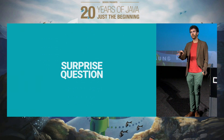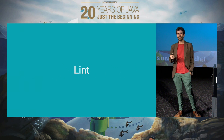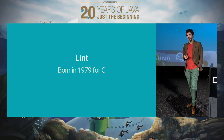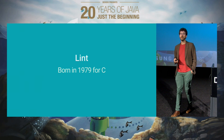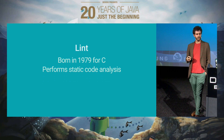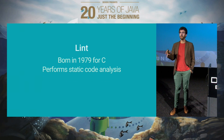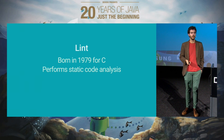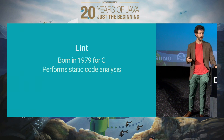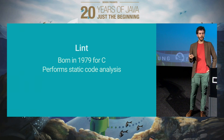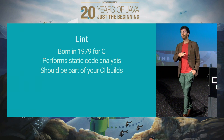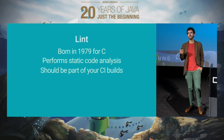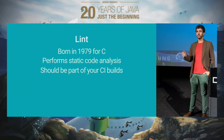Quick question: who knows about Lint? Lint is a static analysis tool that was born in 1979 for C. What it does is it analyzes your code at build time and checks for common mistakes. This is any Lint tool, but Android has got its own specific Lint tool that not only checks for code issues, but also for resources and other things that are specific to the Android platform. Lint should be part of all of your CI builds — you should do static analysis on your code. If you're not doing it, please do it, because it will save you a lot of time and headaches and pain.